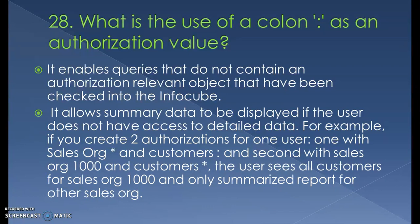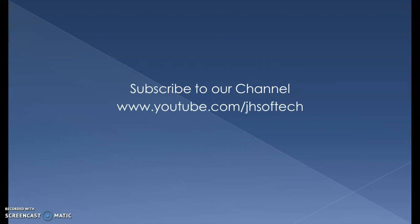What is the use of colon as an authorization value? It enables queries that do not contain an authorization-relevant object that has been checked into the info cube. It allows summary data to be displayed if the user does not have access to detailed data. For example, if you create two authorizations for one user — one with sales organization and all customers, and another with sales organization 1000 and specific customers — the user sees all customers for sales organization 1000 and only a summarized report for the other sales organization.